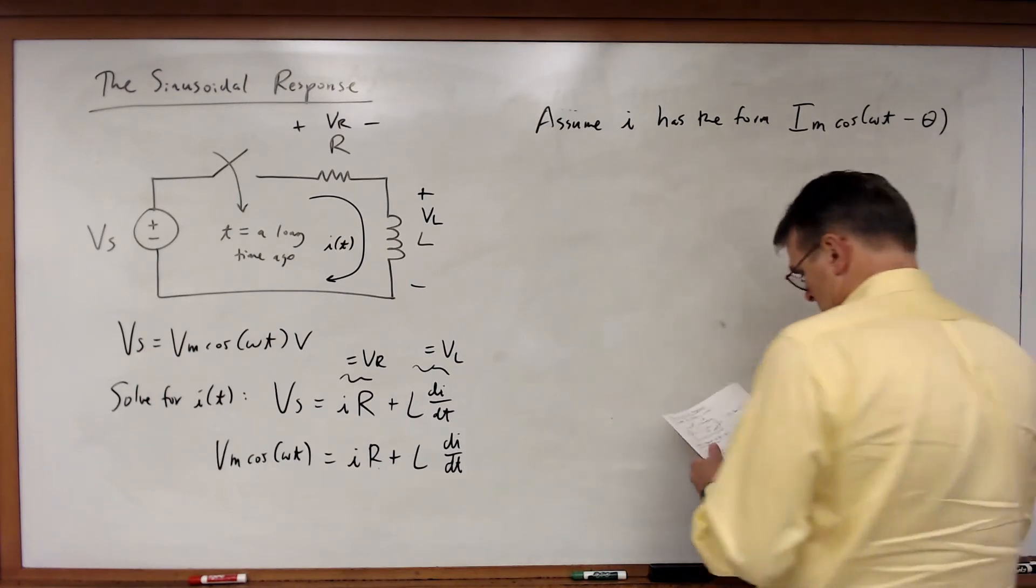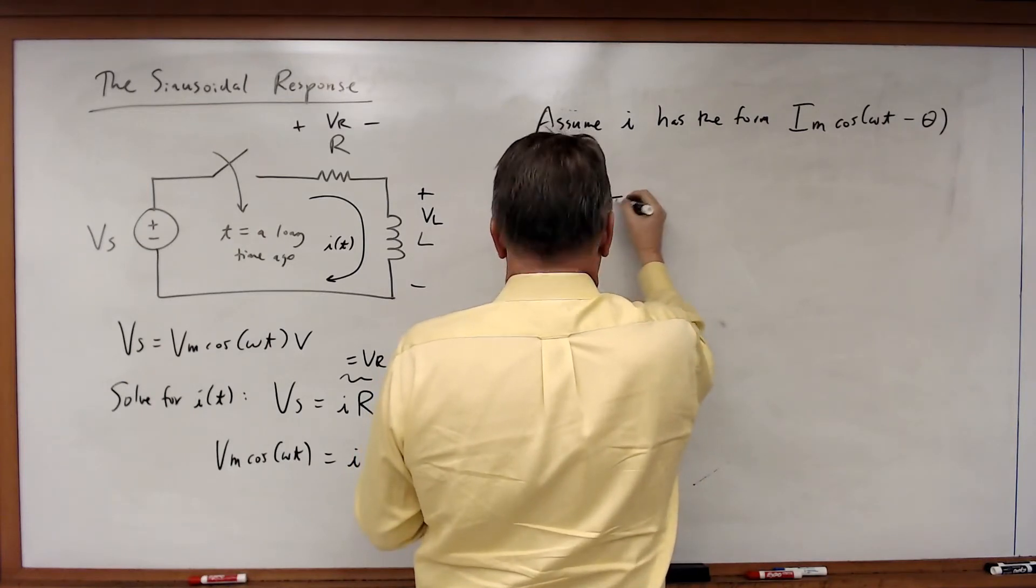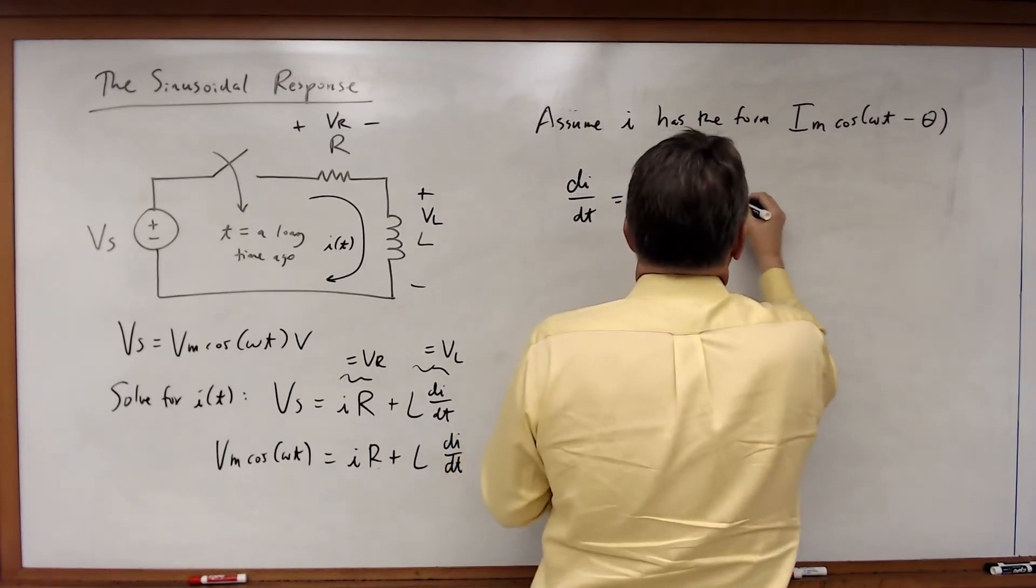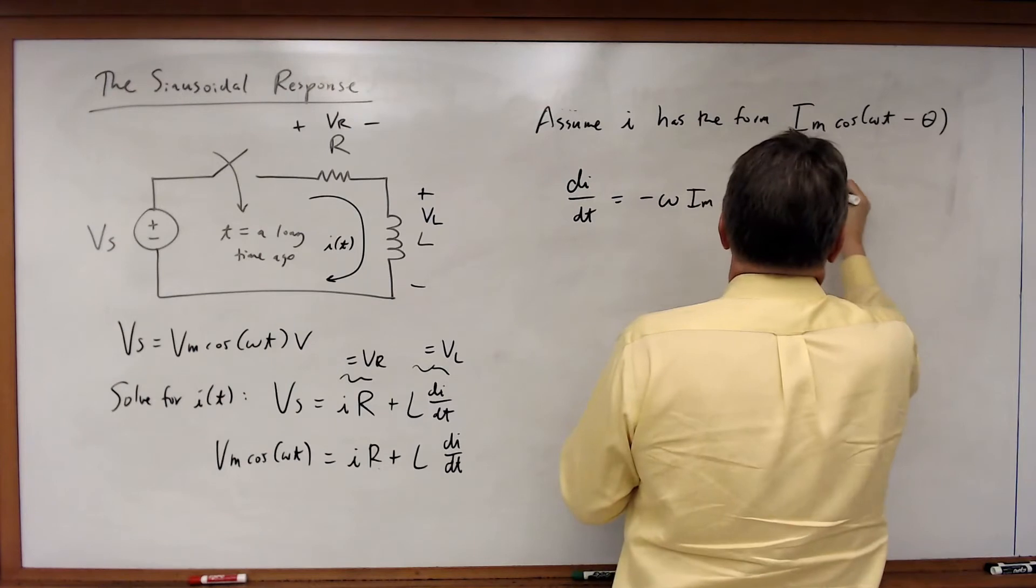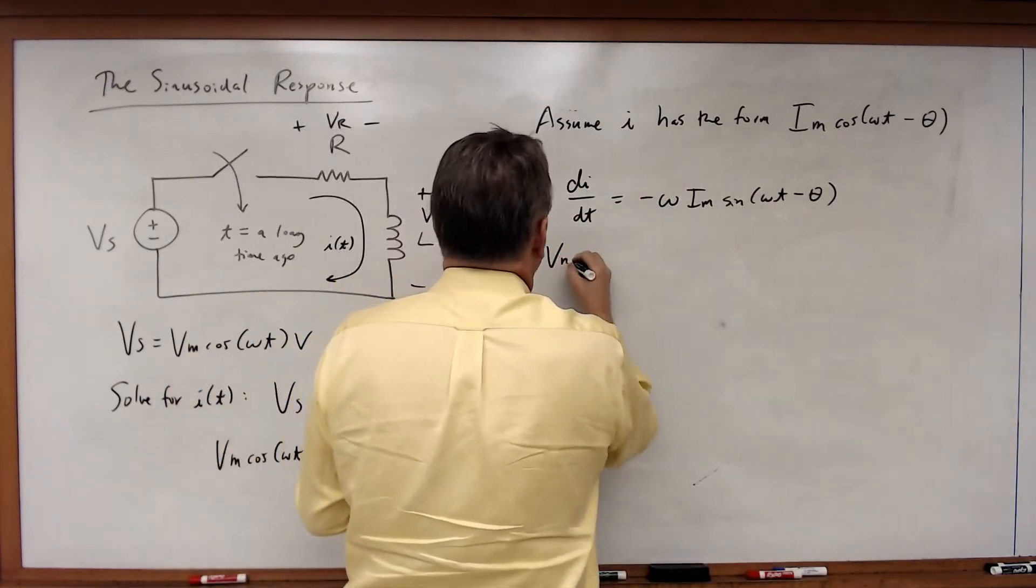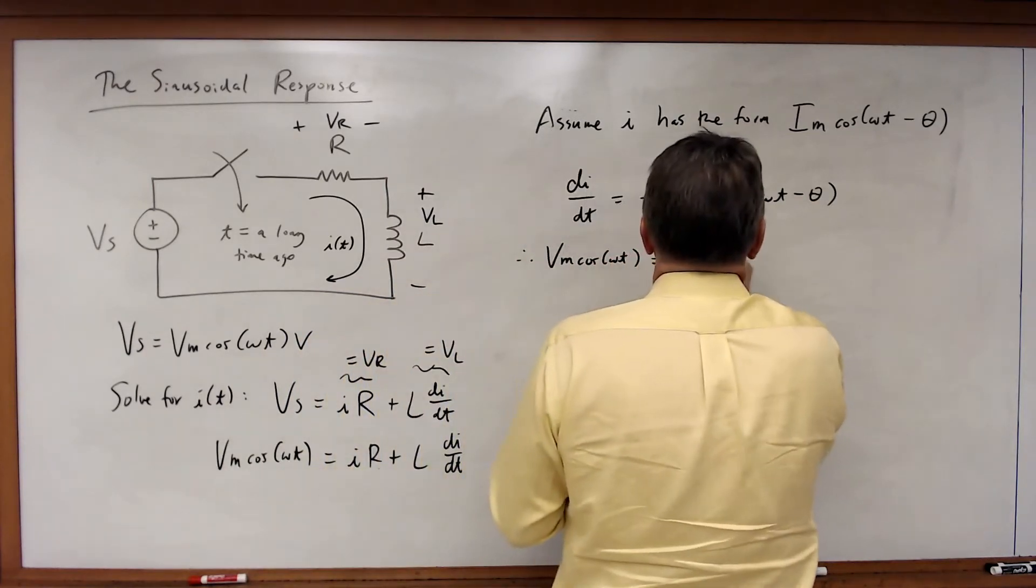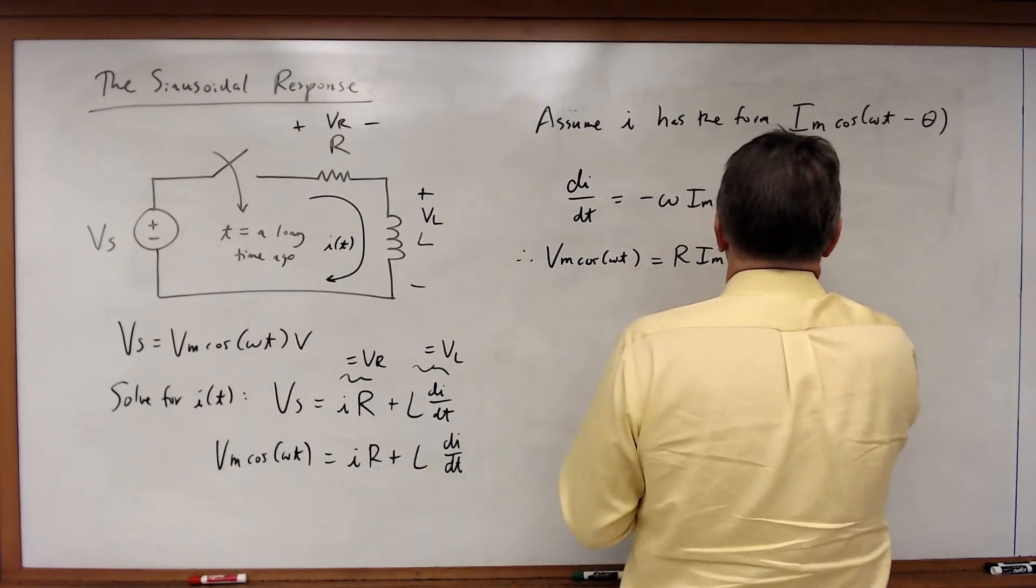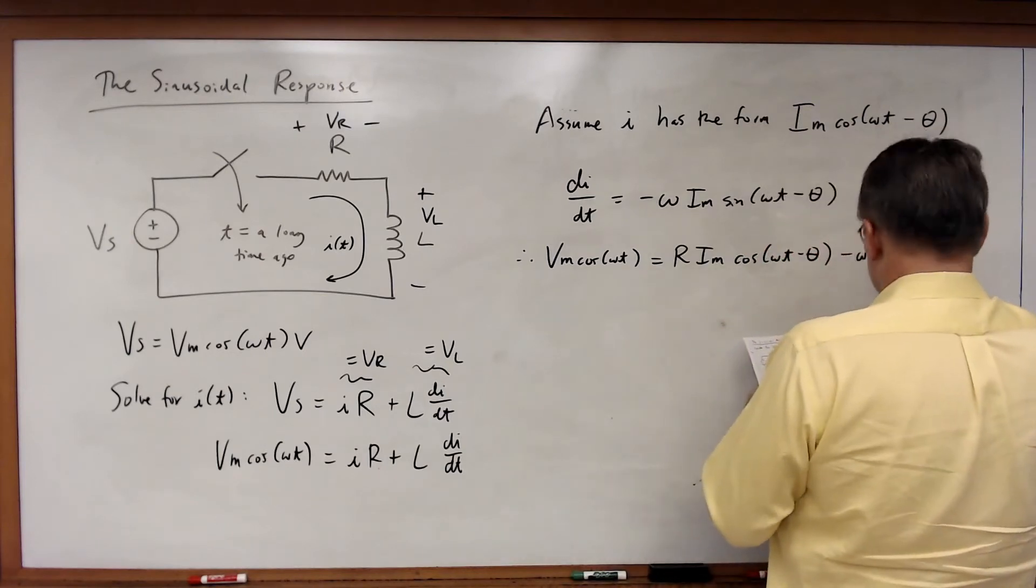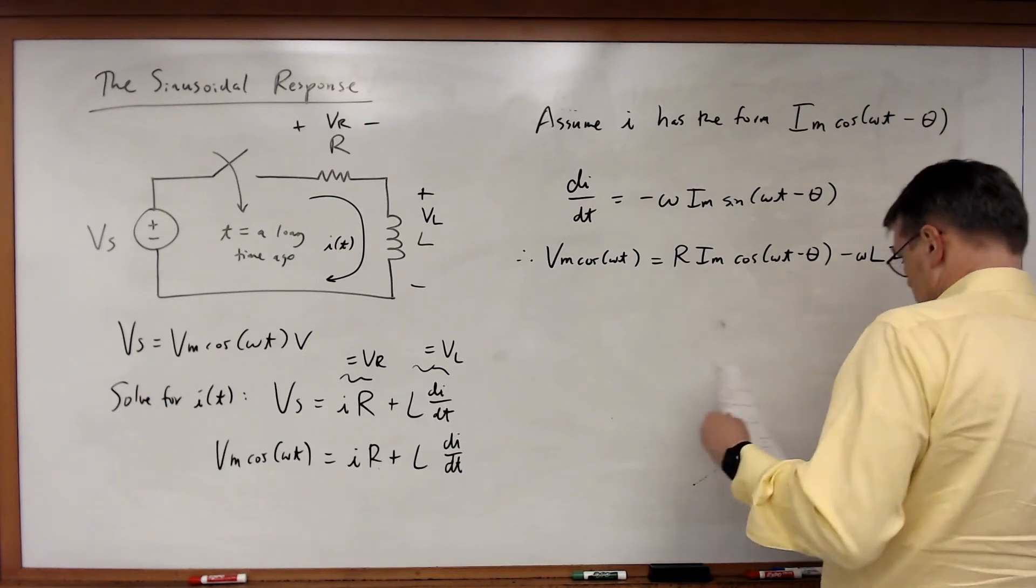So, looking at this, that means that di dt will be equal to minus omega times I M times sine omega T minus theta. And therefore, V M times cosine omega T will be equal to R times I M times cosine omega T minus theta minus omega L times I M times sine omega T minus theta.